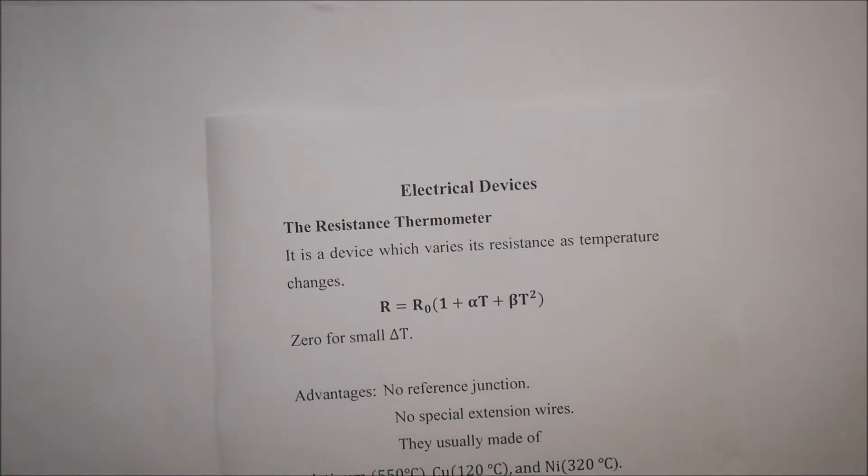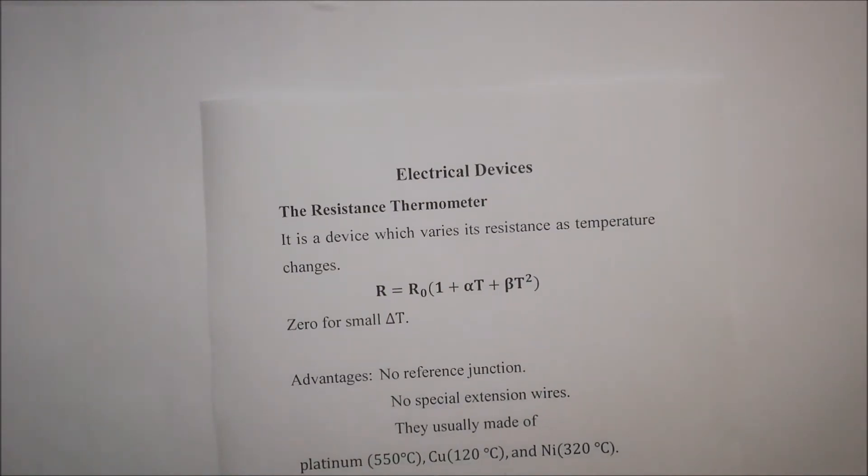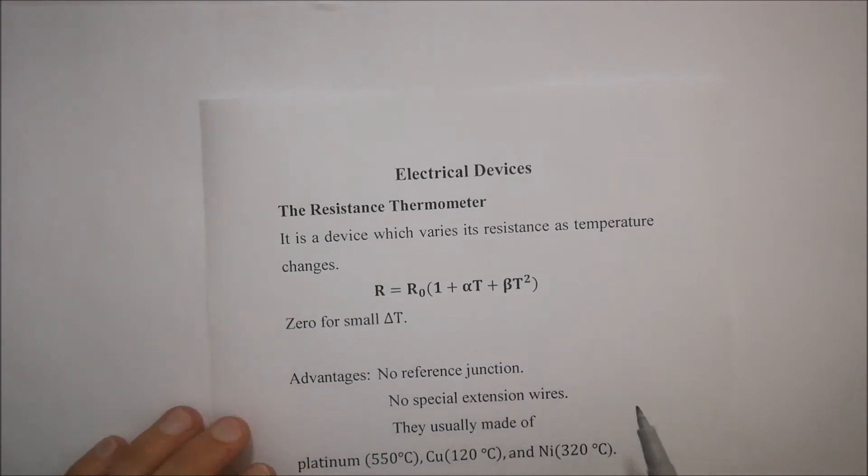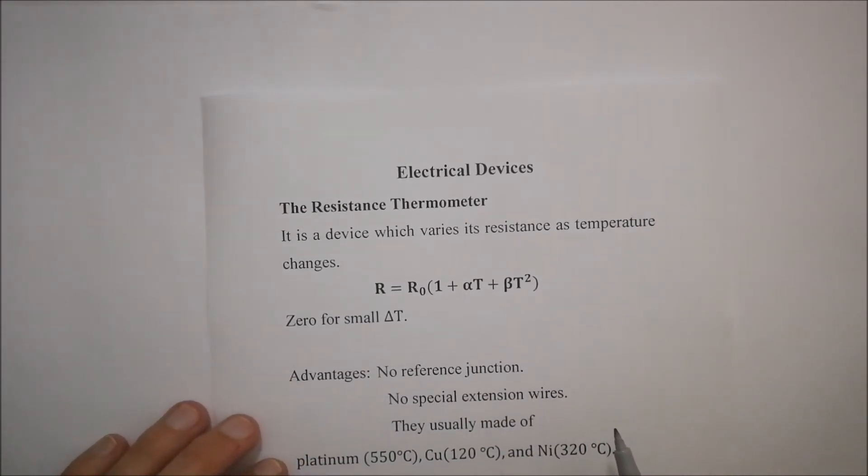Now that we've had a look at some different types of thermometers or devices that can measure temperature, let's have a look at some electrical devices, specifically for measuring temperature. The first one we're going to be looking at is a resistance thermometer. It is a device that varies its resistance as temperature changes.